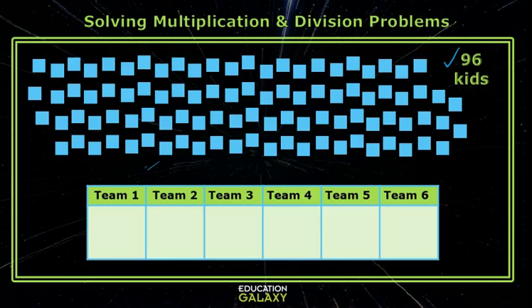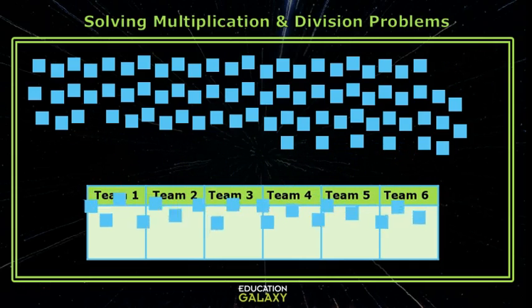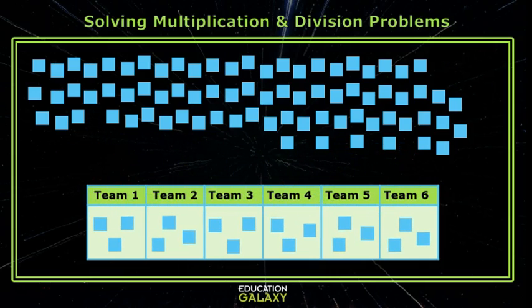We want to take one group of 96 kids and equally separate them into six teams. It'd be kind of like dealing out cards — we would put one child on each team, two children, three children, and so on until we're out of kids. This is a division action.